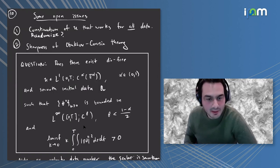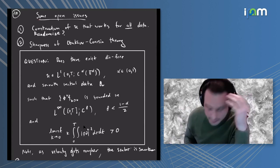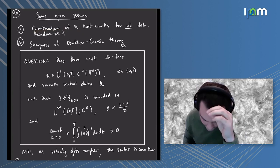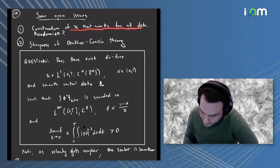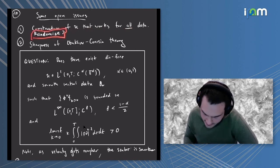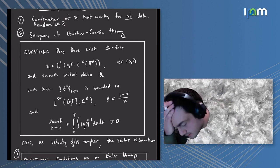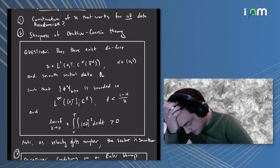Let me highlight some open issues. One is that the construction doesn't work for all data that we have. There's a class of data for which you can make it universal, but if you want to do any data it has to be tailored. It would be very nice to have an example of a drift that makes the scalar dissipate anomalously for all data. One maybe promising idea here is to somehow randomize it and get some statement there.